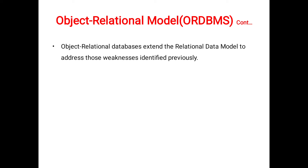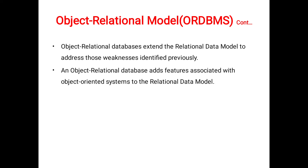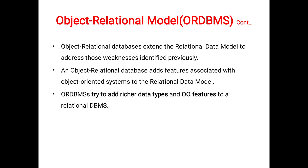The object relational model is an extension of the relational data model. The object relational database adds features associated with object oriented systems to the relational data model. We can add advanced data types and object oriented features such as inheritance — how to use subtypes and supertypes, how to use user-defined functions, and how to create sub-tables and super-tables. Finally, the object relational model is the advanced concept of structured query language.